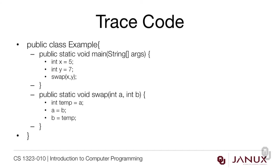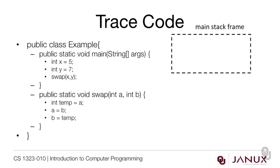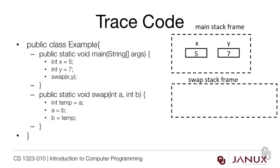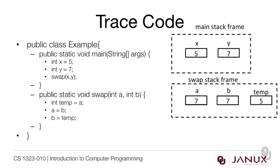Now let's trace the code. We go to the main program and see int x = 5, so we create our main stack frame with a location x containing 5. Then int y = 7, so we create a location y with value 7. Now we're getting ready to swap x and y. We create the stack frame for swap with locations a and b, and the values 5 and 7 get passed to parameters a and b. Our local variable temp gets assigned the value in a, which is 5. Then a gets b's value, and b gets temp's value of 5.